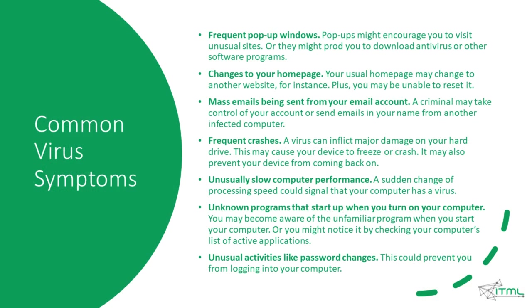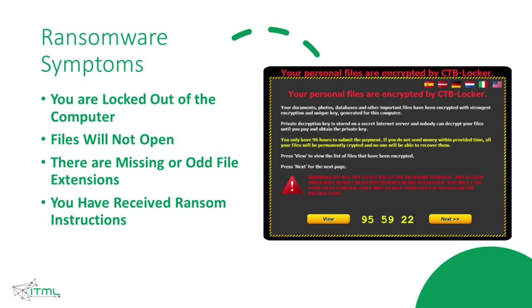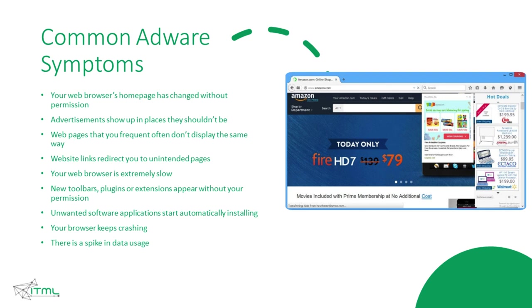There are some common virus symptoms from which you can detect that your device is infected. For worms, the symptoms are quite similar — there is some behavior that you did not expect or cause on your device. This is an example of ransomware: one day you turn on your computer only to find a ransom message instead of your normal operating system screen. The common adware symptom is that you visit a web page and get advertisements from other pages.